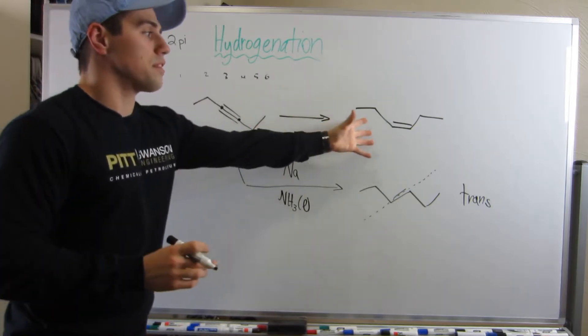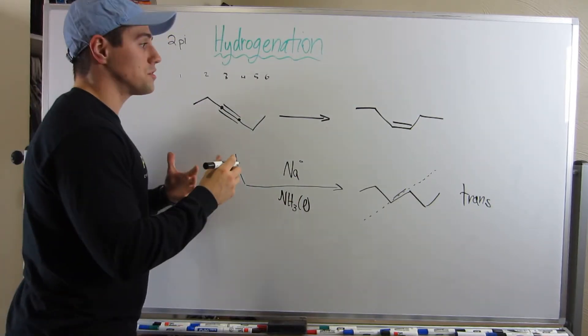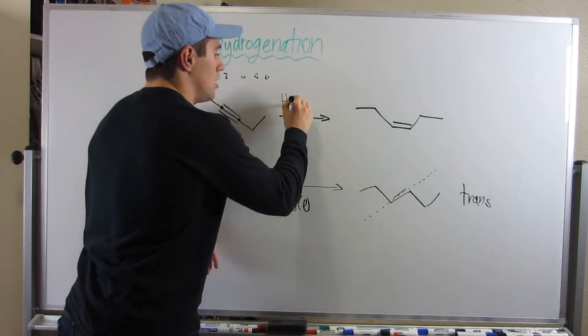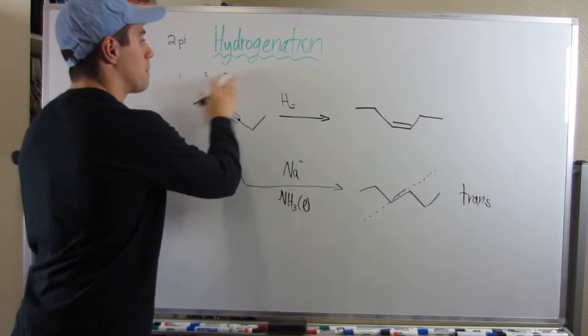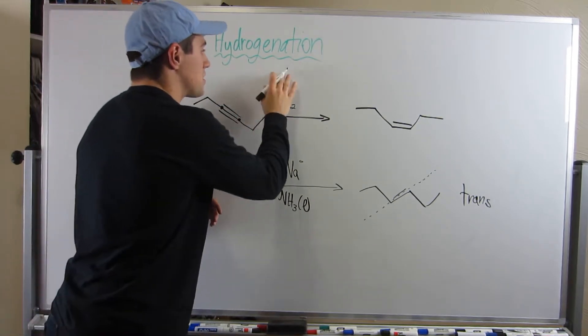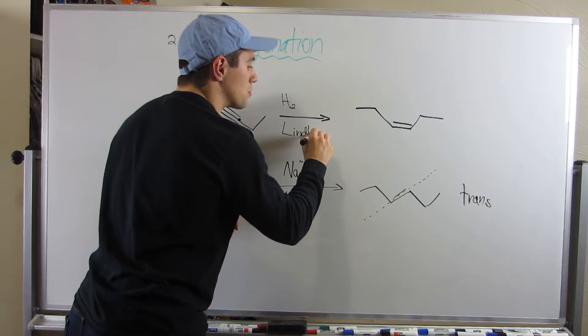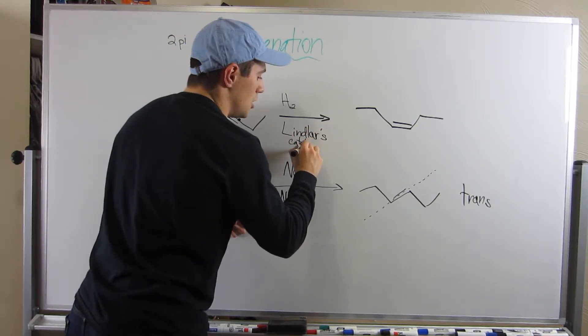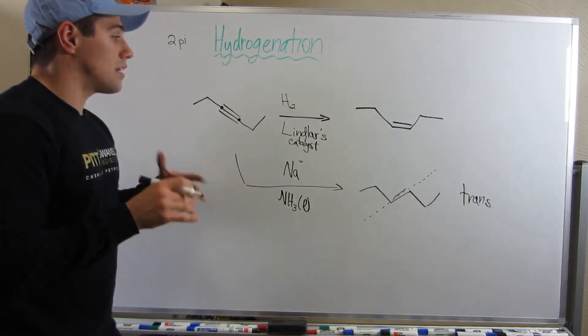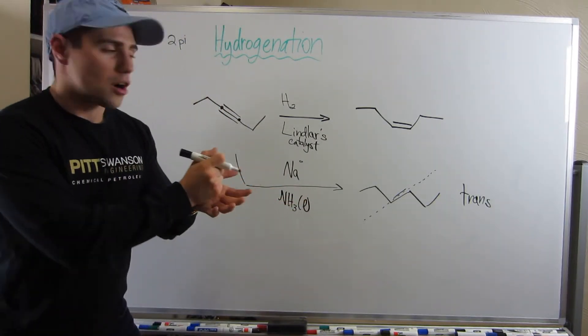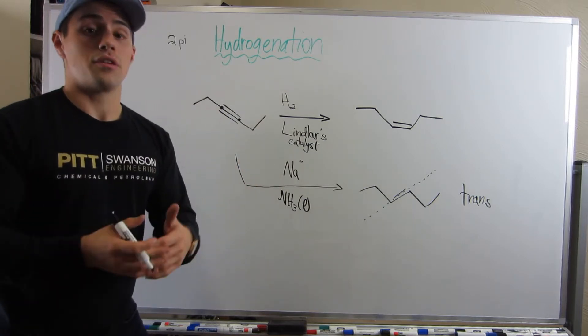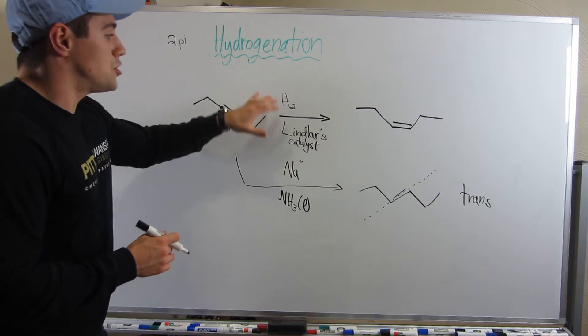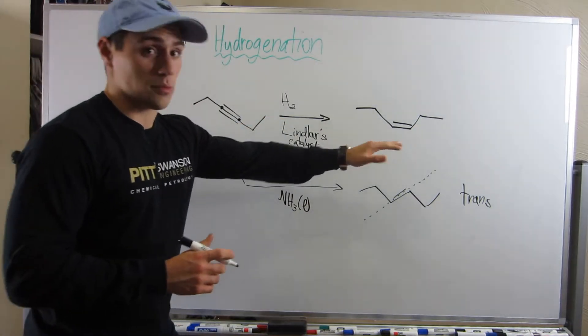So on the other hand, what if we want the cis double bond? How do we accomplish that? So what you'll see is instead of this set of reagents, you'll see your familiar H2, your hydrogen. But you're going to see something down here. And people usually write this out. You'll see Lindler's catalyst. You can Google Lindler's catalyst. It's kind of a bigger cumbersome molecule to draw. So people usually write out the word. But if you were curious, go ahead and Google it. So if you see H2 and Lindler's, you get the cis double bond.